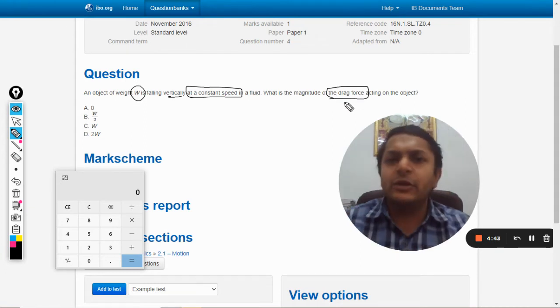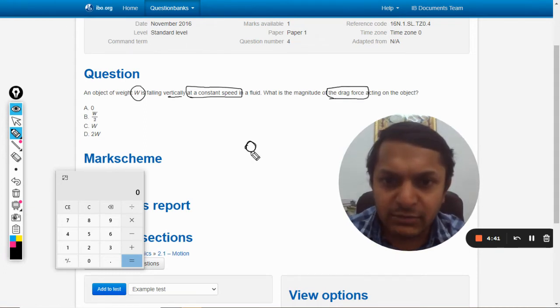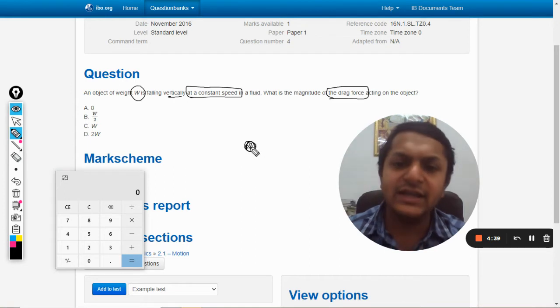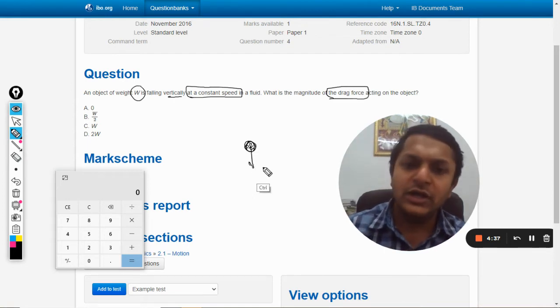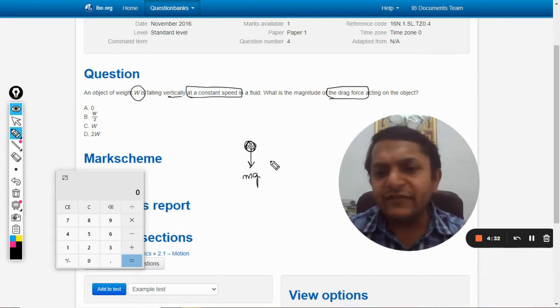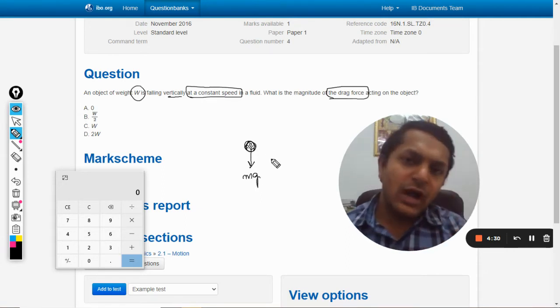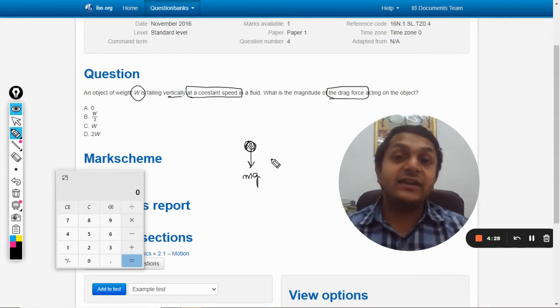So it means there is this body. This body is being acted upon by weight mg. So if there is no opposite force on it, it is being acted upon by a force.